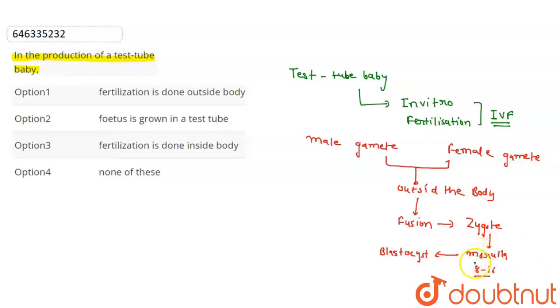It will transfer into the body. Then ultimately the test tube baby is formed by fusion outside the body. So we can say that fertilization is done outside the body, so it will be the correct answer for this question.